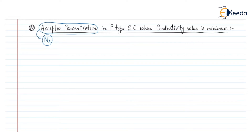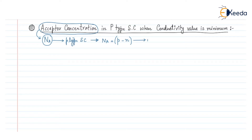In a p-type semiconductor, the acceptor concentration Na is given by the hole concentration minus the electron concentration. If we put the values of hole concentration and electron concentration into equation number one, we can get the value of Na. For minimum conductivity sigma_min, the hole concentration p is given by Ni times the square root of mu_n divided by mu_p.